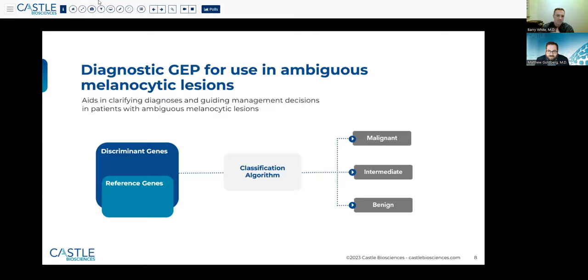What we're looking for is the expression of particular discriminant genes in the algorithm, as well as reference genes, essentially control genes, that go through the classification algorithm to return a result of gene expression profile suggestive of a malignant neoplasm, gene expression profile suggestive of a benign neoplasm, or an intermediate score.